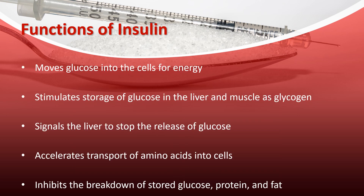Before we get into diabetes, let's talk about insulin and why it's important. Insulin is a hormone secreted by the beta cells in the pancreas in response to rises in blood glucose levels after eating. Insulin is responsible for many things in the body, but the most important thing it does is move glucose from the blood and push it into the cells so the cells can use the glucose for energy. Insulin also stimulates the liver and muscle cells to store glucose in the form of glycogen for later use.